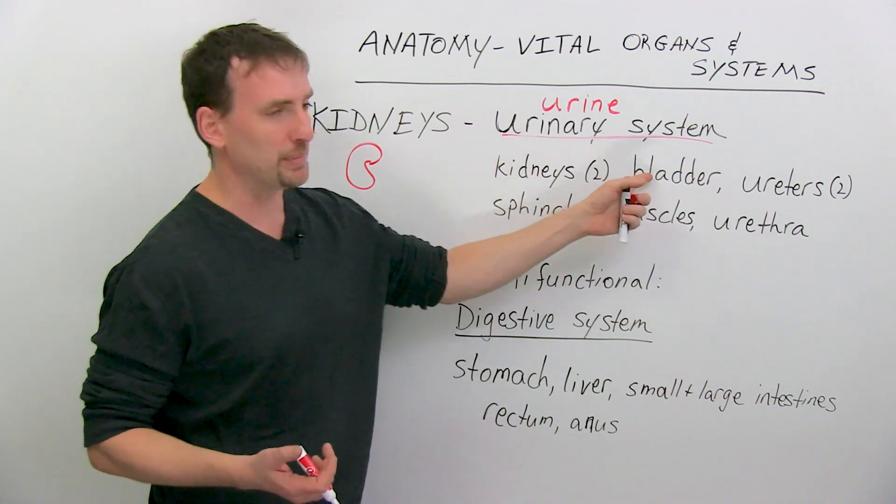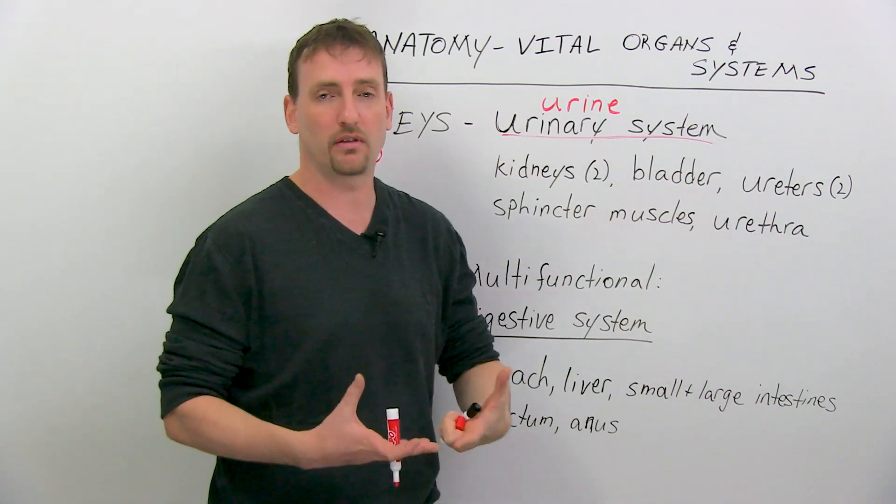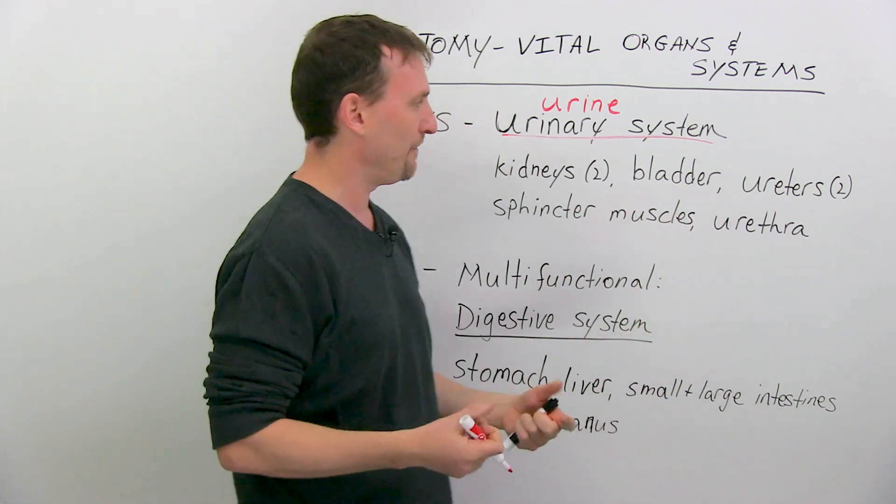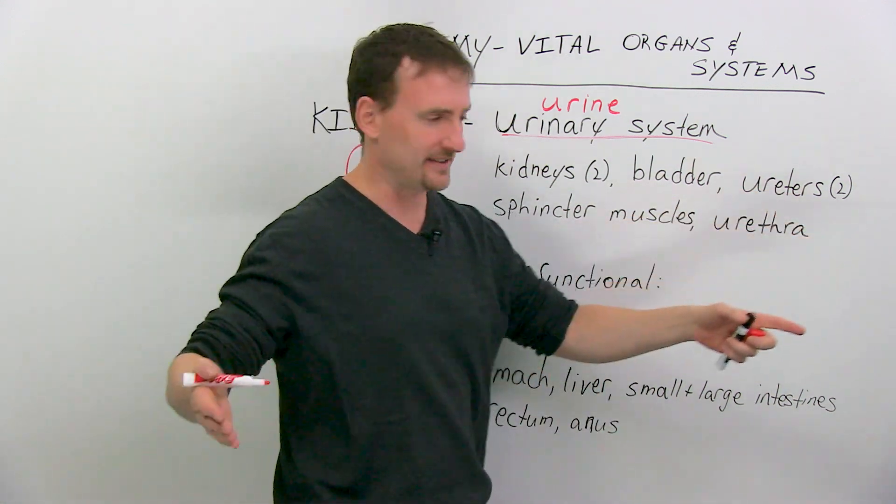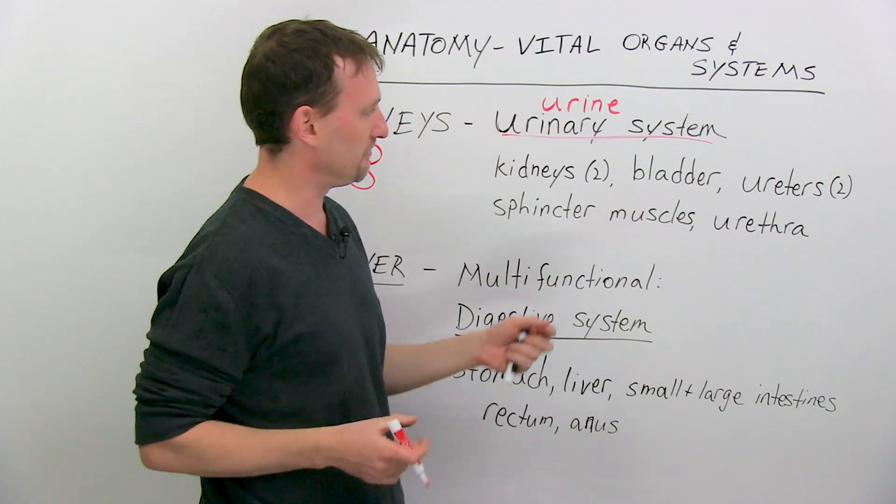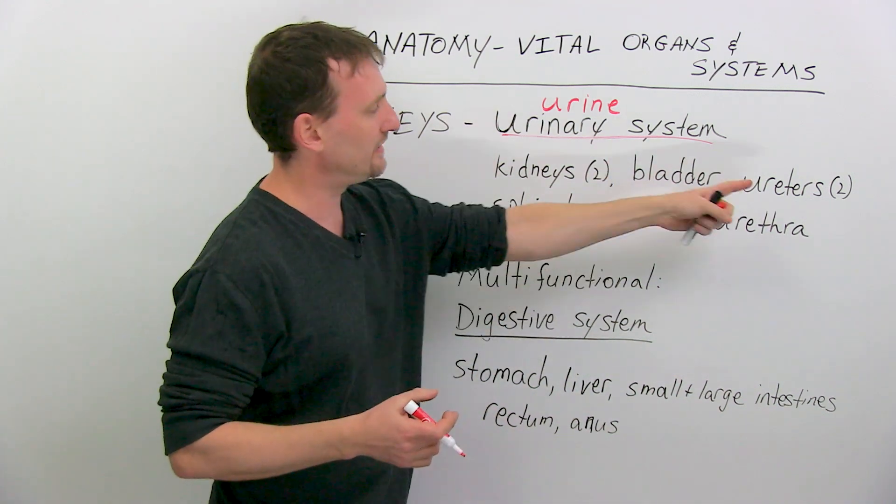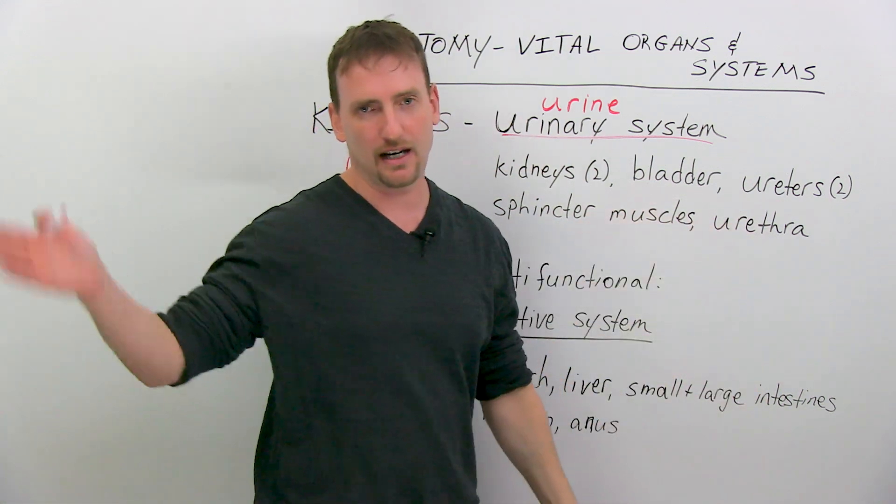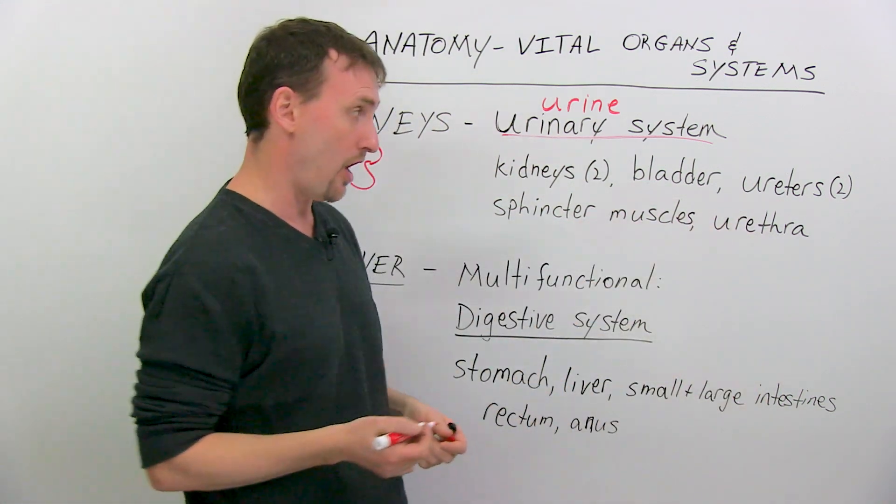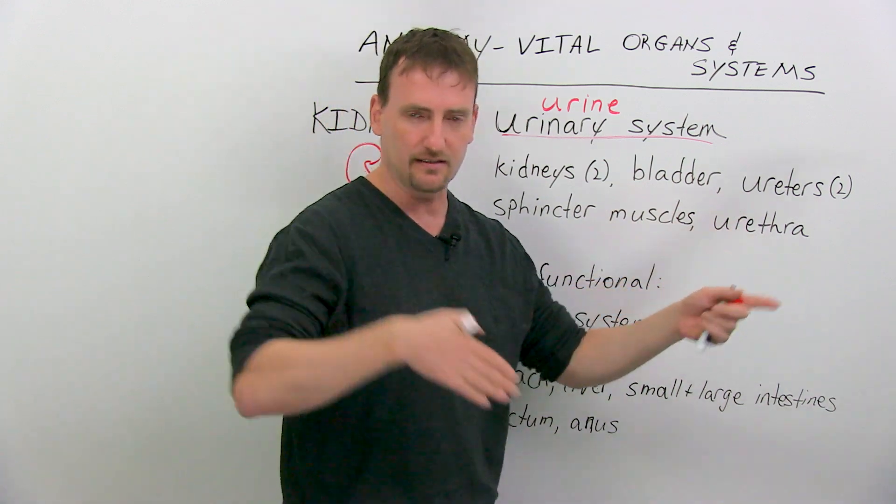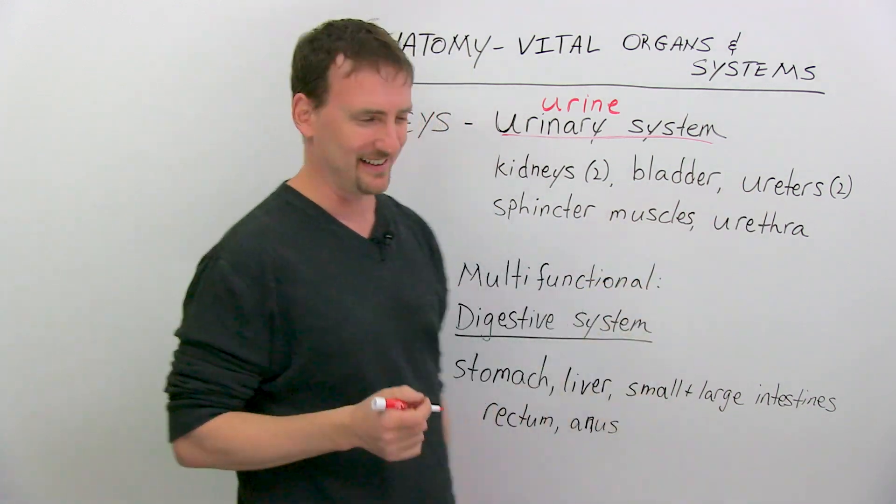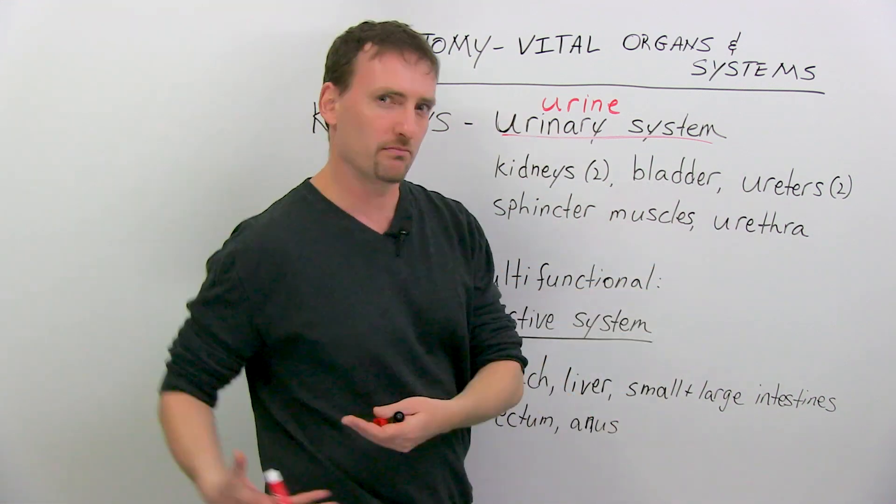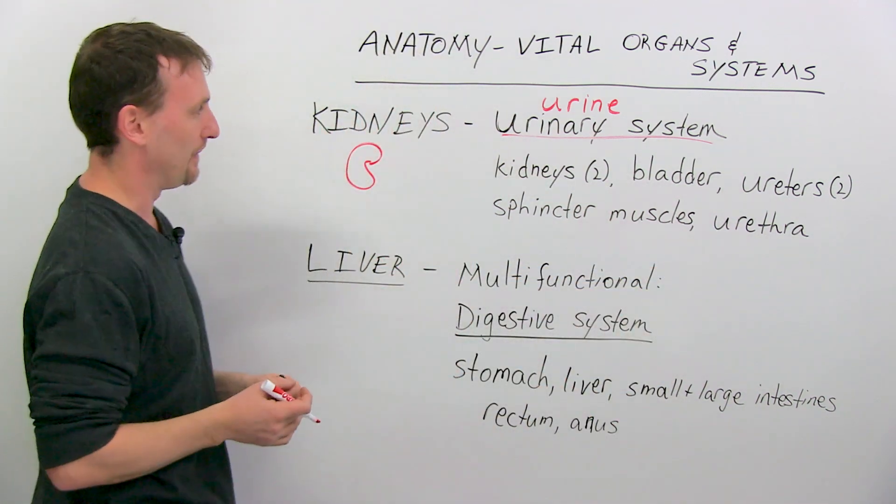So it consists of the kidneys, the bladder - this is where you store the pee, and when you say, oh I really have to pee, that's your bladder getting full. The two ureters that pass it along to the bladder from the kidneys, the ureters to the bladder, and then through the urethra outside when you go to the washroom. The urethra is where the pee comes out, basically, that little tube. And sphincter muscles are basically in your anus, in your bum, where for other things as well.